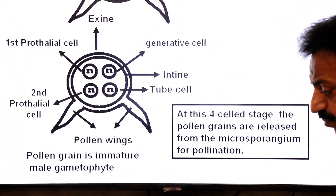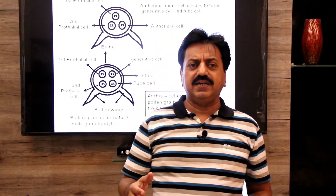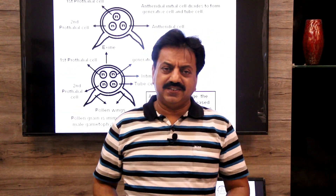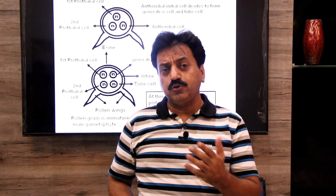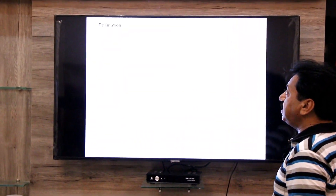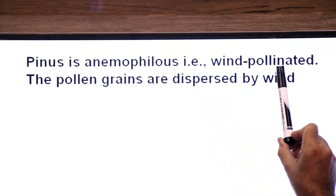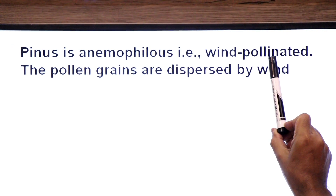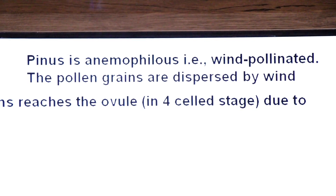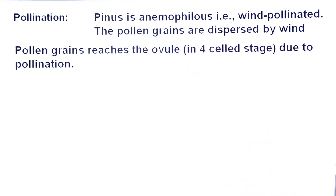The pollen grain is released for pollination. Pollination in Pinus is the transfer of pollen grains from the male cone to the female cone. Pinus is anemophilous — wind pollinated. The pollen grains are dispersed by wind and land on the female cone. The pollen grain reaches the ovule at the four-cell stage.